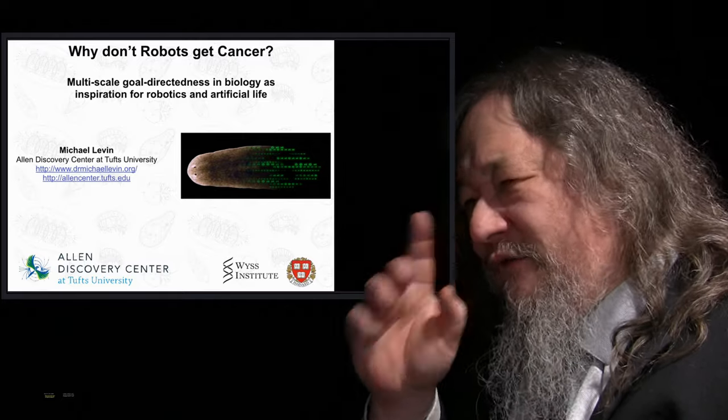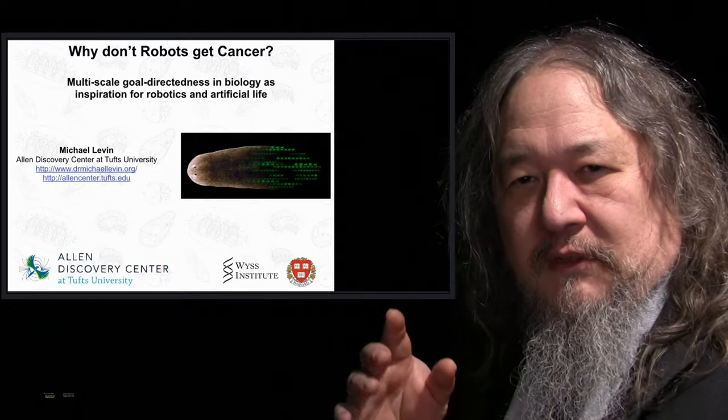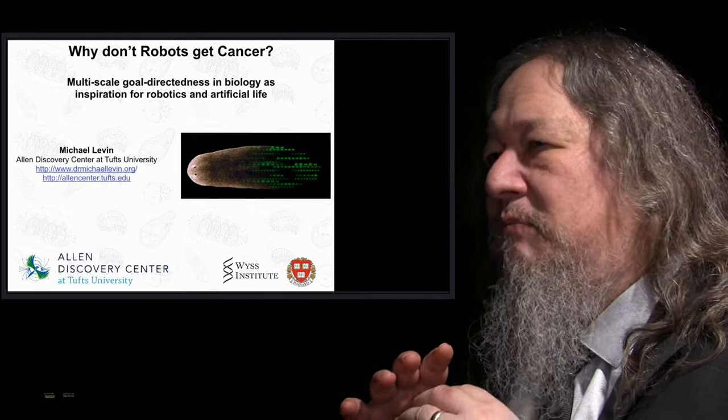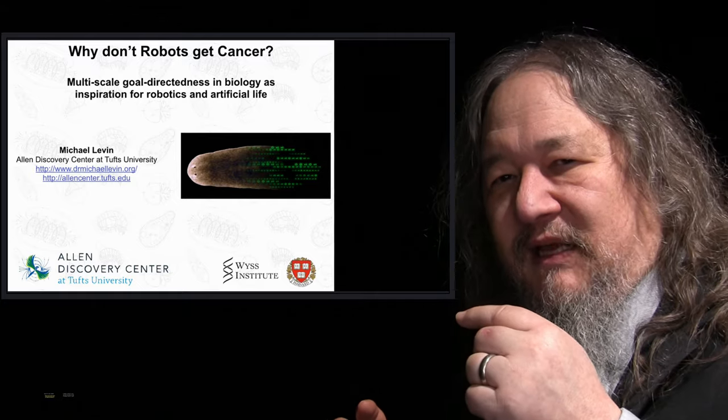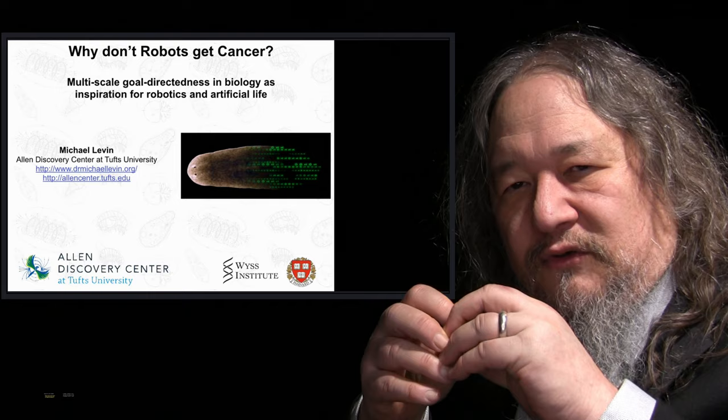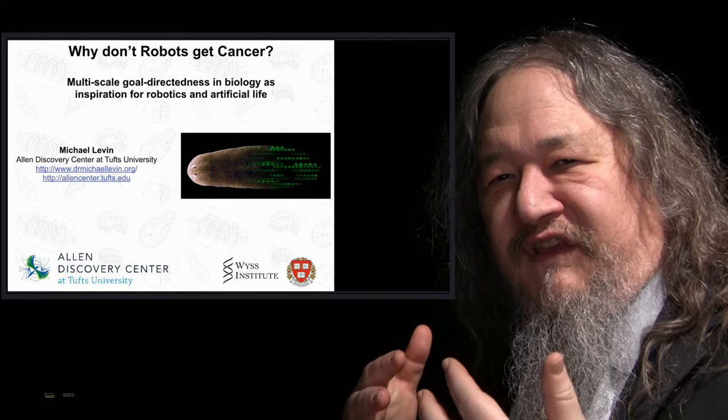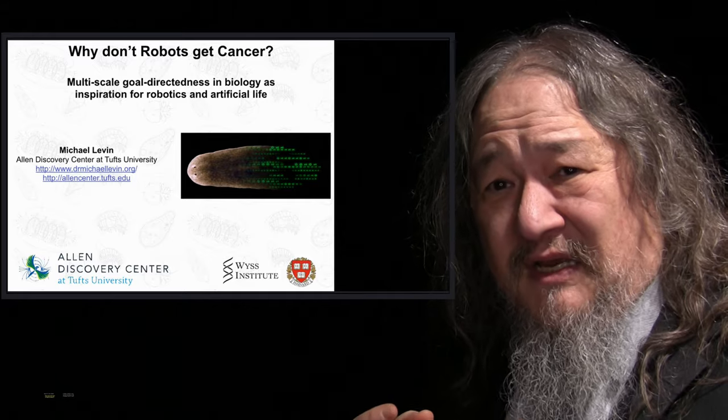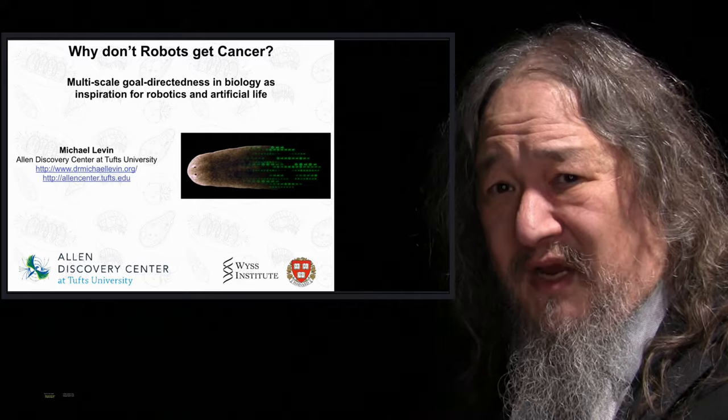And on that, so I've talked about Michael Levin before. He did the first keynote of the ALIFE conference, and it's just more crazy stuff. Why don't robots get cancer? I mean, he has this thing where you have biological models where they have cancer tumors forming. And by screwing around with the bioelectric fields, I mean, it sounds like the matrix, by changing the ion channels to affect the thing, the cancer goes away.